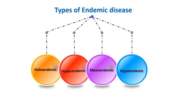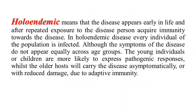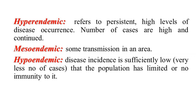The four subgroups are holoendemic, hyperendemic, mesoendemic, and hypoendemic. Holoendemic means the disease appears early in life and, after repeated exposure, the person acquires immunity. In holoendemic disease, every individual of the population is infected, though symptoms do not appear equally across age groups — children are more likely to express pathogenic responses, while older individuals carry the disease asymptomatically due to adaptive immunity. Hyperendemic refers to persistent high levels of disease with a high and continued number of cases. Mesoendemic involves some transmission in an area with a low number of cases reported. Hypoendemic disease incidence is sufficiently low that the population has limited or no immunity to it.